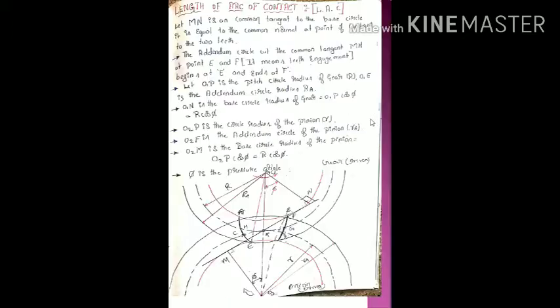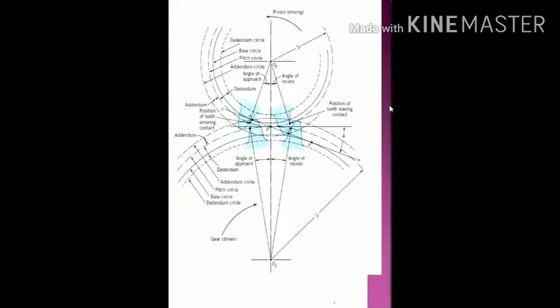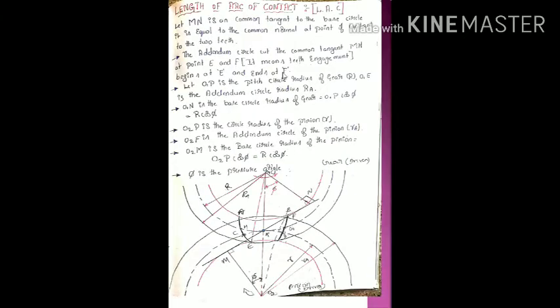We are going to discuss today two important derivations. The first one is length of path of contact. Length of path of contact means when two gears are meshing each other.